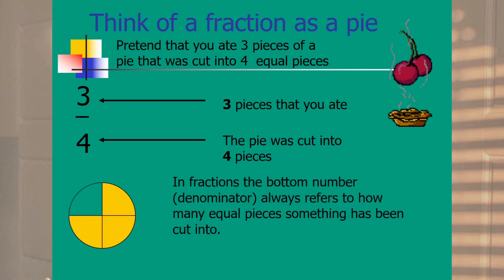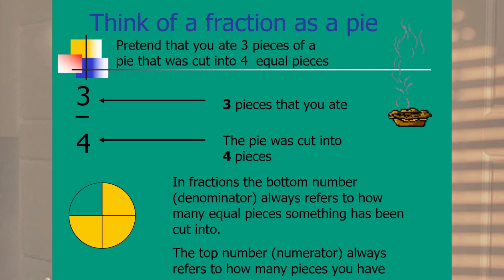So in this fraction, the denominator, the bottom number always refers to how many equal pieces something has been cut into or divided into. The top number always refers to how many pieces you have chosen or selected.